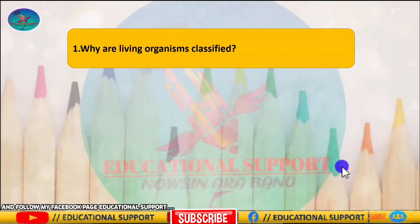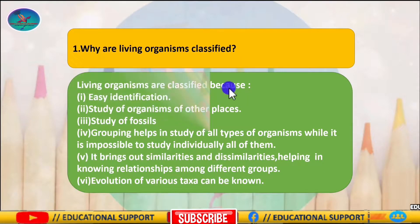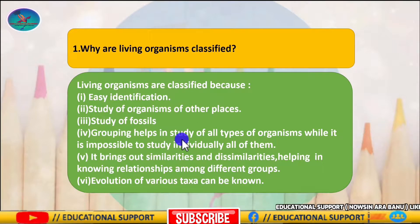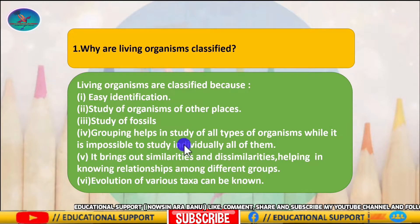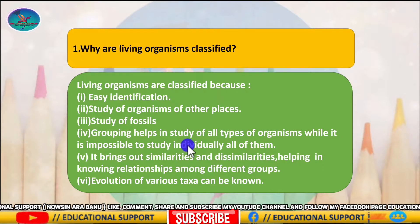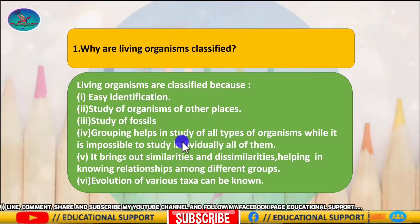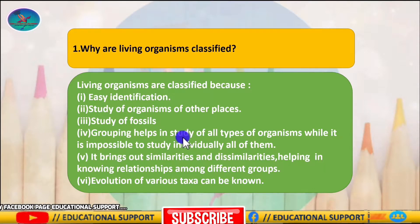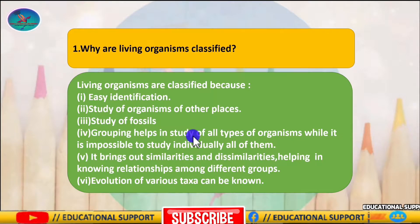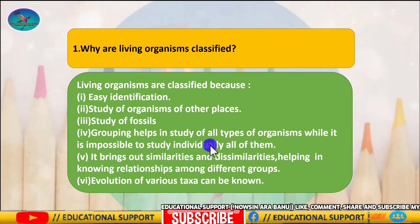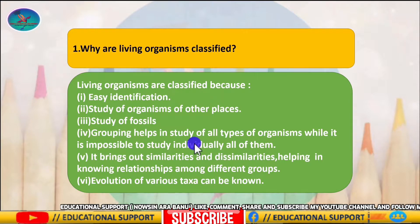The first question is: why are living organisms classified? The earth contains millions of organisms, and we may know plants and animals that live near us by their native names. These local names vary from place to place within a country, which leads to confusion in identifying and studying specific species. Therefore, organisms must be called by a common name throughout the world to standardize nomenclature and the study of organisms. To achieve this, organisms are named and categorized according to their characteristics.